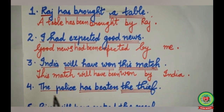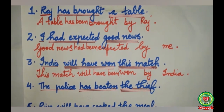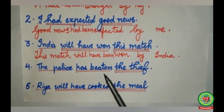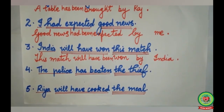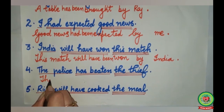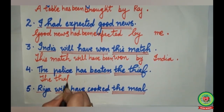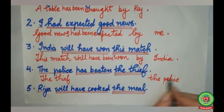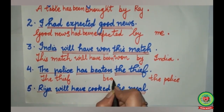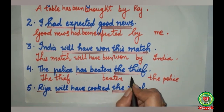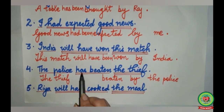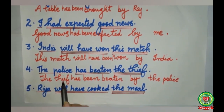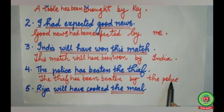Fourth sentence: The police has beaten the thief. The police is the subject, has beaten is the action word, the thief is the object. The thief will come in the beginning, the police will go to the last. Beaten will remain beaten. Before the police we add by. Has changes to has been. The sentence becomes: The thief has been beaten by the police.